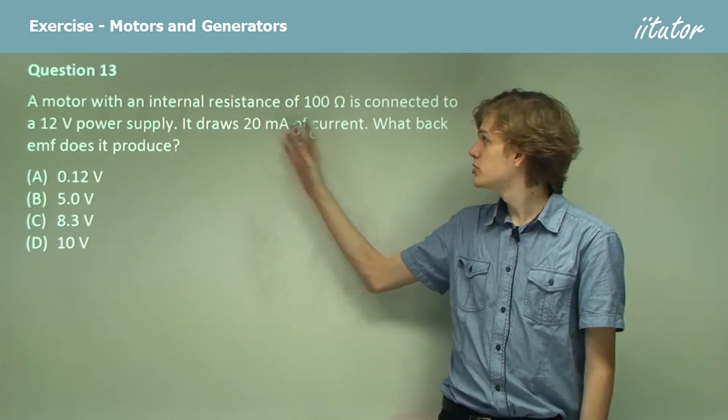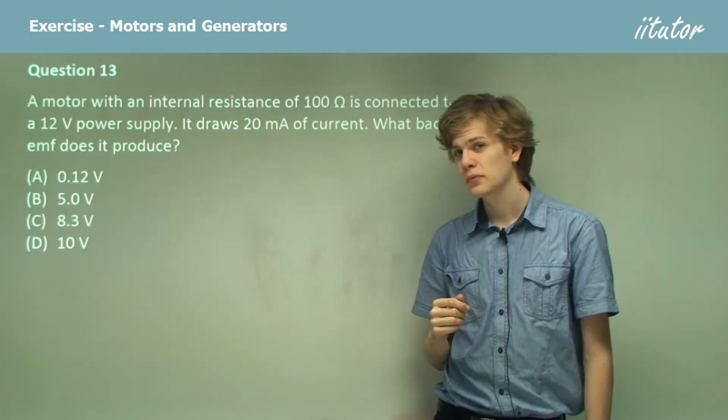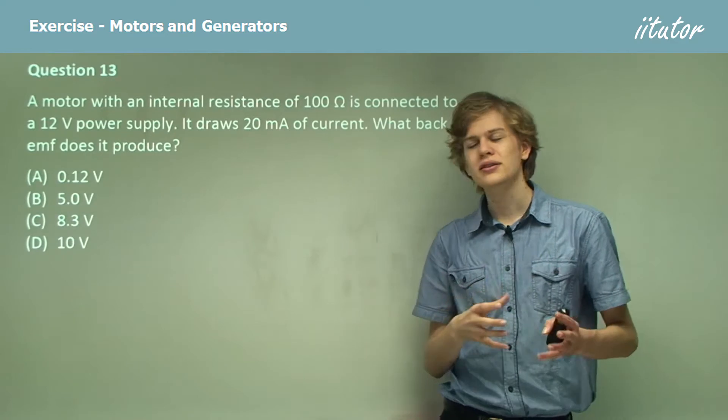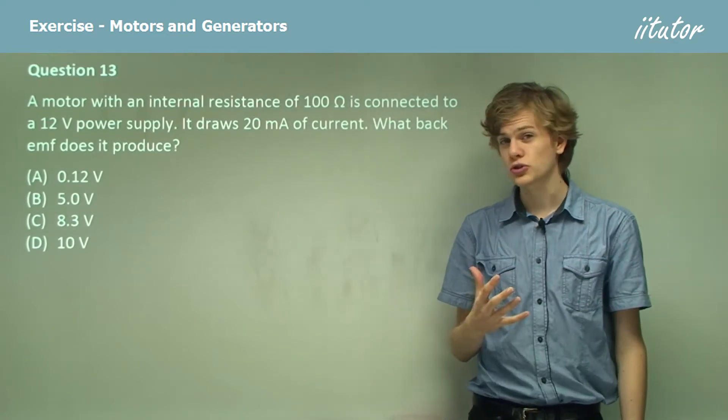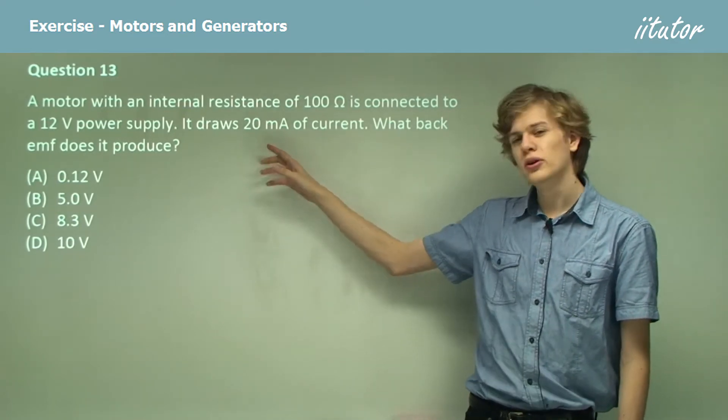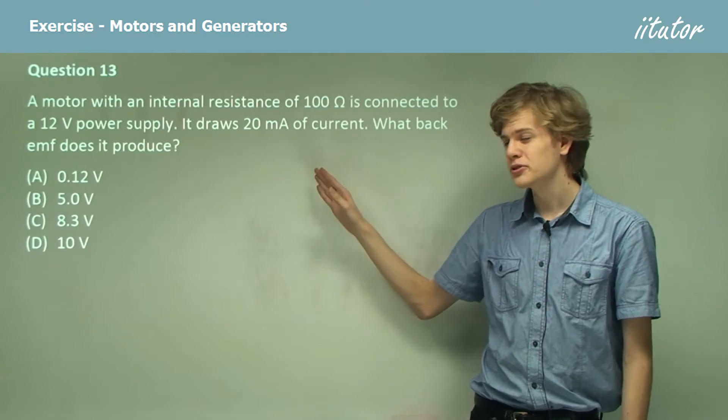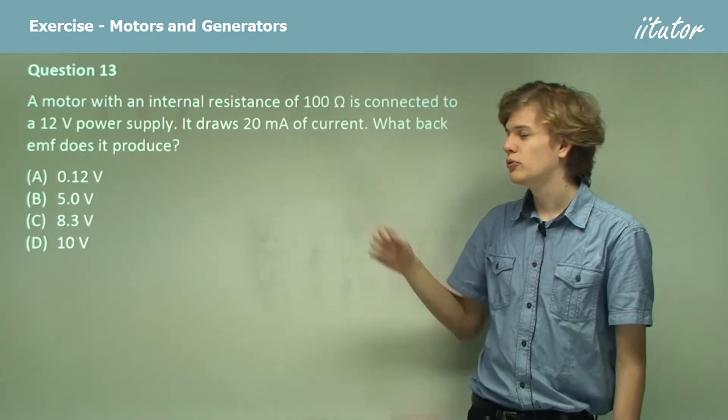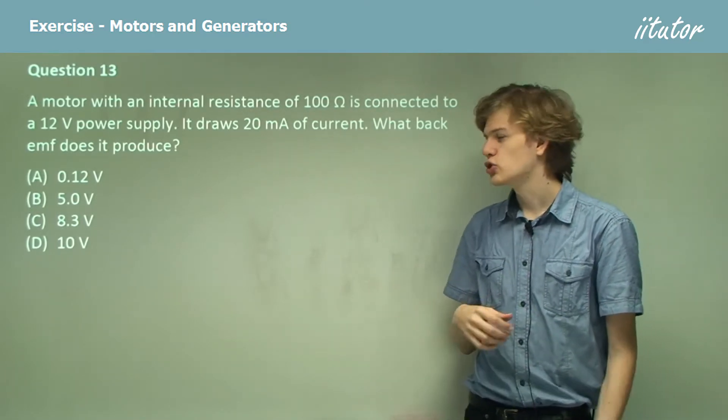Current is 20 milliamps, resistance is 100 ohms. So by multiplying these together we can figure out the voltage across the coil. 0.002 amps times 100 ohms gives us 2 volts.